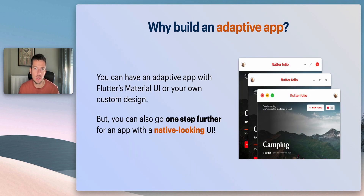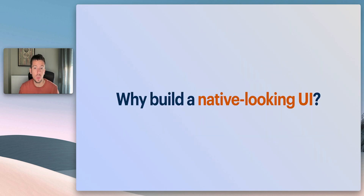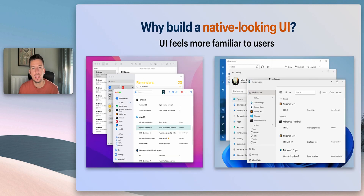All these may seem like small things but eventually make a difference in how the user perceives and navigates your app. You can configure this and build an adaptive app with Flutter's default Material UI or your own custom design, but you can also take it one step further and go for a native looking user interface — a design that not only respects adaptive guidelines but also tries to get closer to a native look and feel for each platform.